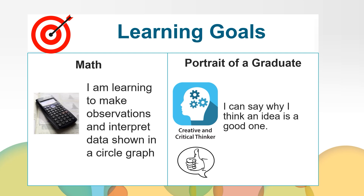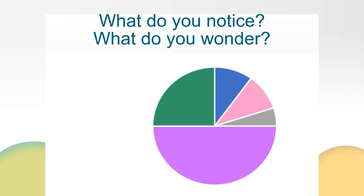What do you notice? What do you wonder? This graph is about favorite ice cream flavors. How does this change your interpretation? What might you be noticing or wondering now? You might be noticing that half the graph is purple, so half of the survey participants voted for the same flavor. You might be wondering what flavors of ice cream are represented on this circle graph anyways.